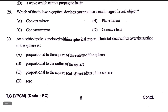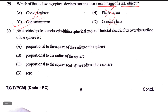Which of the following optical devices can produce a real image of a real object? A plane mirror produces a virtual image. A convex mirror produces a virtual image. A concave lens produces a virtual image, but can also produce a real image.